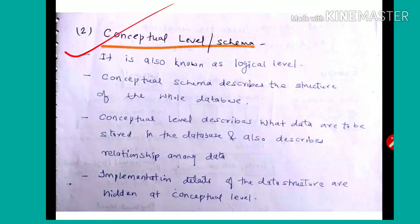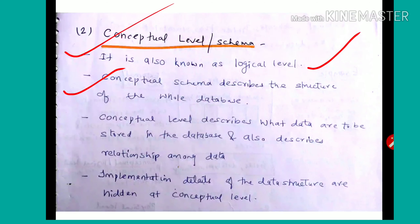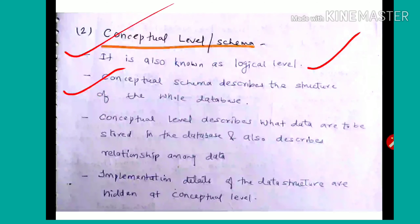Next is the conceptual level, also called the logical level, with its conceptual schema. The conceptual schema describes the structure of the whole database — what will be stored in the database, what entities will be in it, what attributes they have, and what constraints they carry.